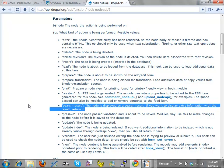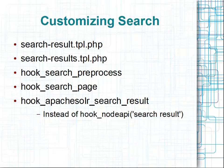The old hook_node_api search result was for when something is being displayed on screen — do you want to add more information to how it's being displayed? But if you're going with Apache Solr, you instead need to use hook_apache_solr_search_result. The reason for this is that when Apache Solr does a search and gets back its information as a chunk of XML, it hasn't done a node_load and doesn't go through the hook_node_api stuff. So hook_apache_solr_search_result allows you to add data to the result.